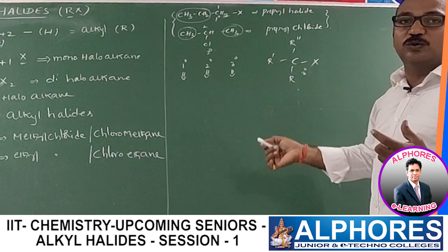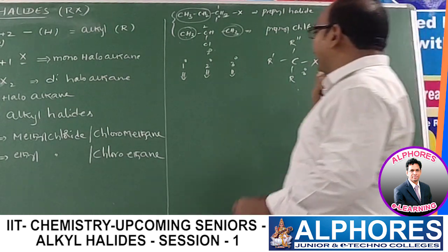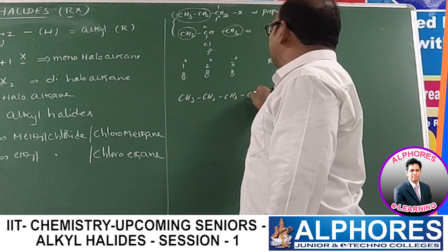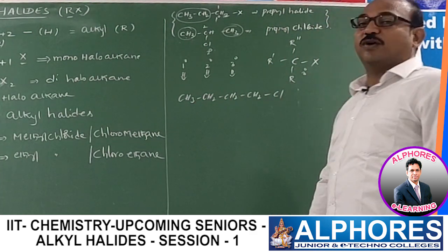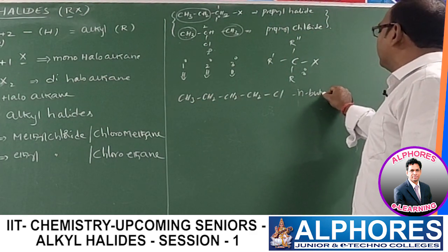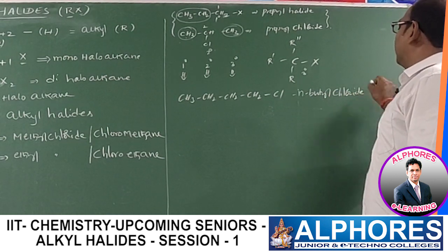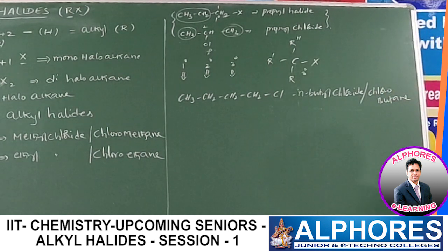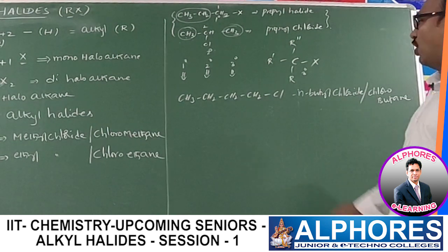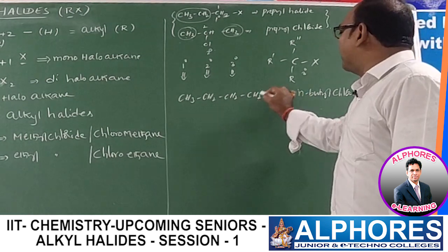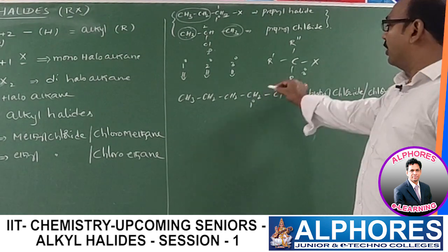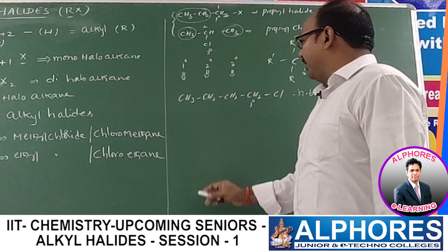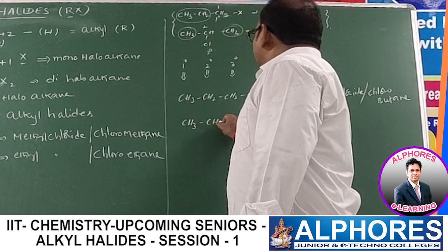Taking butyl chloride: CH3CH2CH2CH2Cl has four carbons — common name is n-butyl chloride, IUPAC name is 1-chlorobutane. The chlorine-containing carbon is attached to only one alkyl group (which possesses three carbon atoms — that does not matter), so it is primary. Now placing halogen on the second carbon: that second carbon is attached to two alkyl groups, so it is secondary.